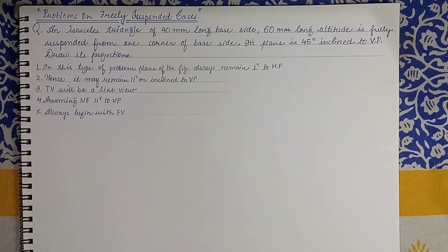The problem goes like this: an isosceles triangle of 40 mm long base side, 60 mm long altitude, is freely suspended from one corner of base. Its plane is 40 degrees inclined to VP. Draw its projection.